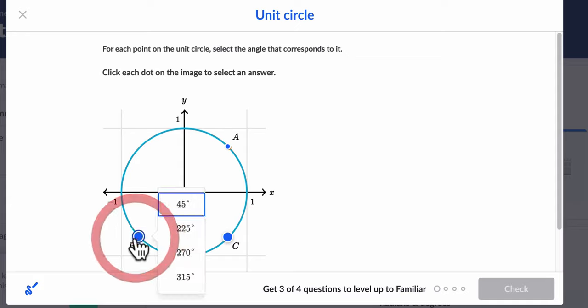45 degrees. Alright, so this is a 90 degree angle. About the halfway mark there is 45. Here, this is 180 degrees. Plus 45 degrees is 225.